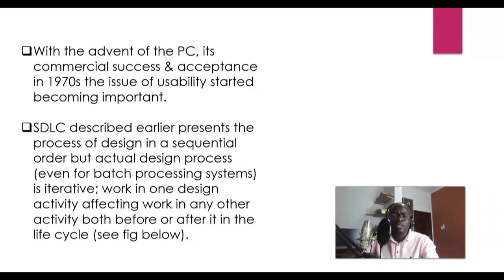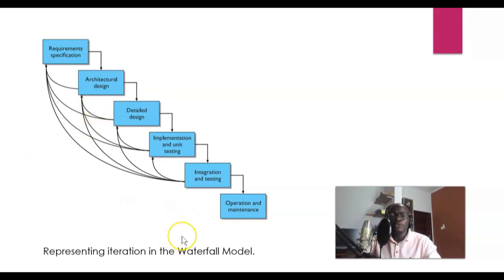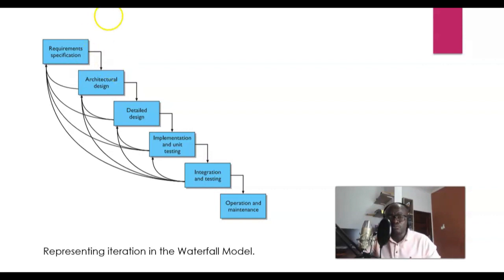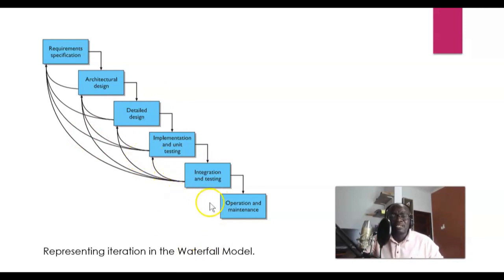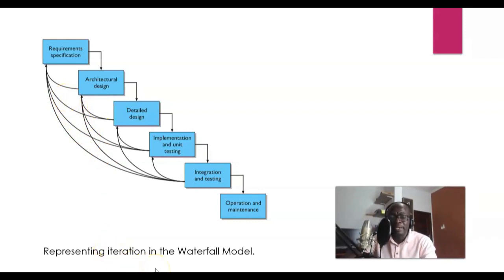If we were to use the waterfall model to show what actually happens in reality, we see that although the traditional model requires each stage to be fully completed and signed off before moving to the next, real-world situations don't work that way. For example, by the time you do integration testing, issues may arise that force you to go back to implementation and unit testing, which then requires revisiting detailed design. This illustrates how iteration actually occurs even within a waterfall model.